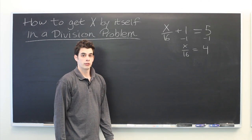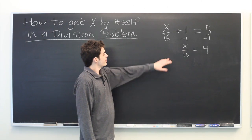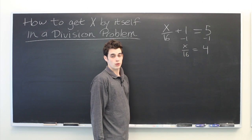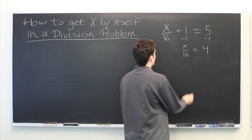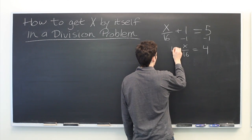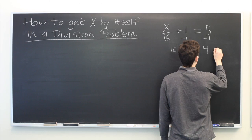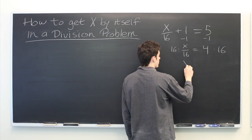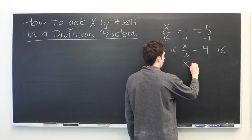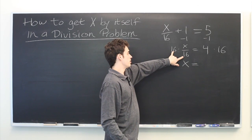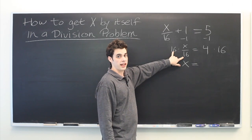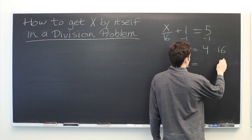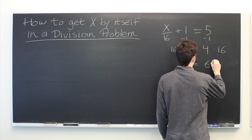Now, from here, we can isolate x by simply multiplying both sides of the equation by 16. The left side just becomes x since these two 16's cancel. And the right side is just 4 times 16, which is 64.